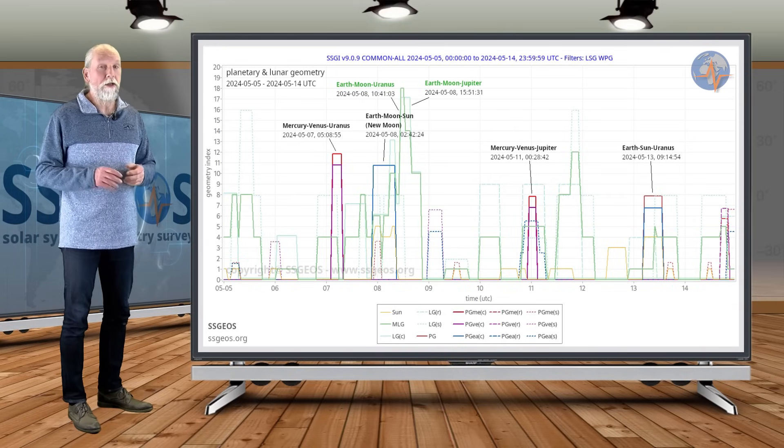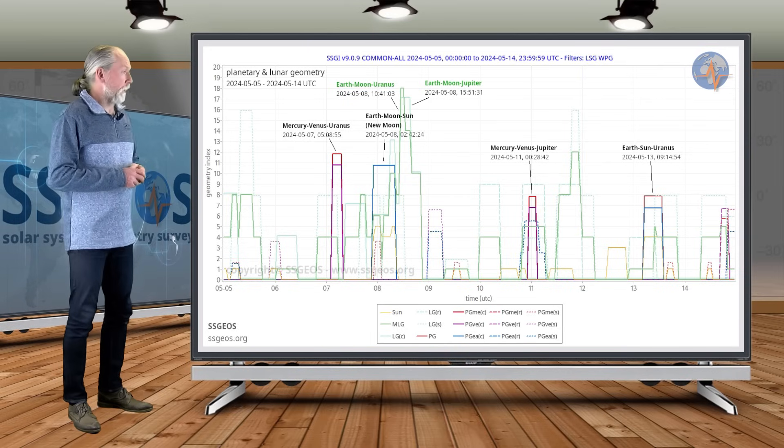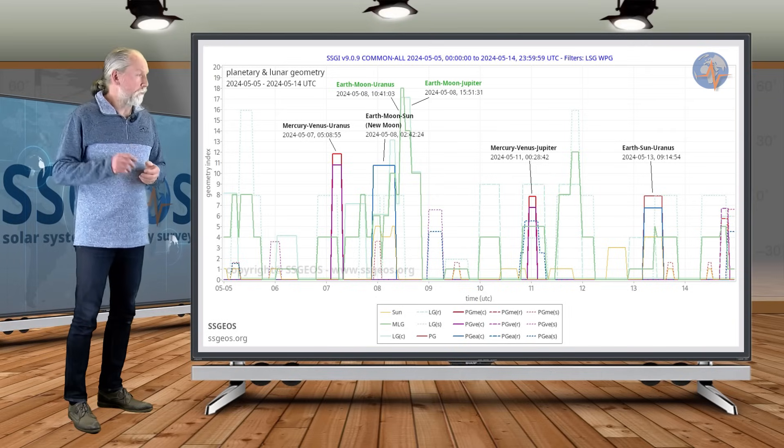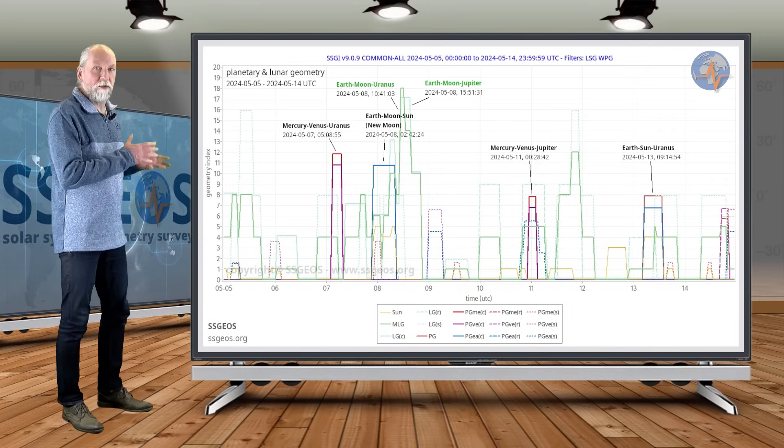As a result, from 8 to 10 May I think will be more critical. There could be some stronger shaking, maybe even a larger earthquake. Again, this is because Mercury and Venus are in combination with an outer planet, and that's always a bit tricky.